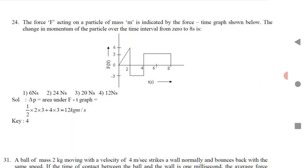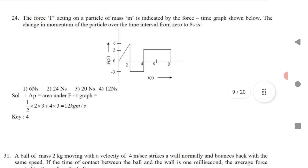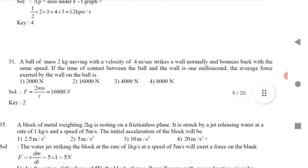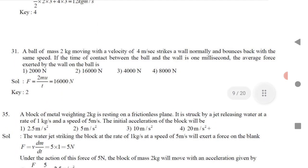Question 16 (very important): The force acting on a particle of mass m is shown on a force-time graph. Find the change in momentum from t = 0 to t = 8 seconds. Apply the same method as before — compute areas of triangle, square, and rectangle regions under the F-t graph and sum them to get the answer.